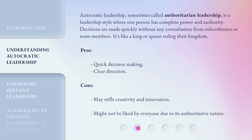Autocratic leadership, sometimes called authoritarian leadership, is a leadership style where one person has complete power and authority. Decisions are made quickly without any consultation from subordinates or team members. It's like a king or queen ruling their kingdom. Pros: quick decision-making, clear direction. Cons: may stifle creativity and innovation, and might not be liked by everyone due to its authoritative nature.